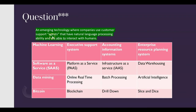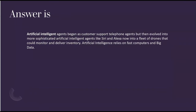What about this one: 'An emerging technology where companies use customer support agents that have natural language processing ability and are able to interact with humans.' So an emerging technology — maybe something like machine learning or artificial intelligence, or even blockchain and Bitcoin. Which one would describe support agents with natural language processing ability that can interact with humans? That would be artificial intelligence agents. Artificial intelligence agents began as customer support telephone agents, but they've evolved into more sophisticated agents like Siri and Alexa, and even into a fleet of drones that can monitor and deliver inventory. Artificial intelligence relies on fast computing and big data.